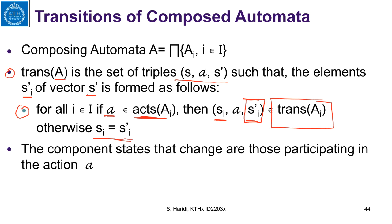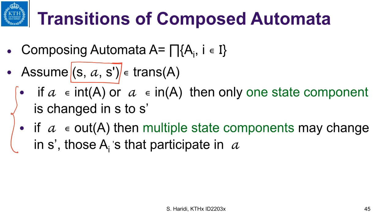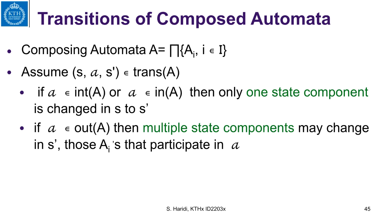The component states that change are those participating in action A. In summary: if A is an internal or input action of composed automaton A, only one state component changes. If A is part of the output actions of the composed automaton, multiple state components may change — specifically those of the component automata that participate in the action. This ends the definition of a composed automaton.